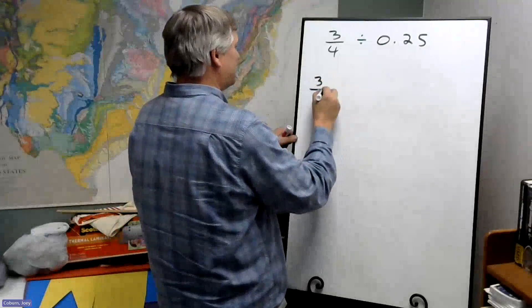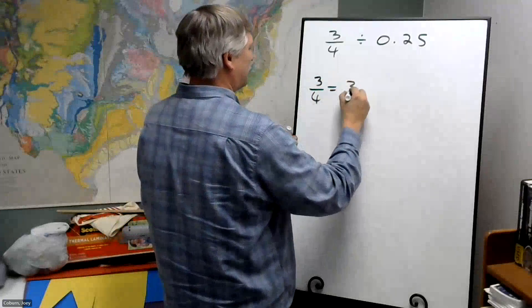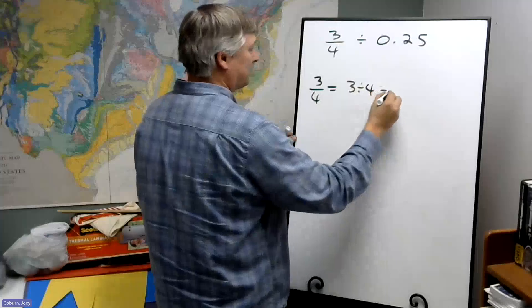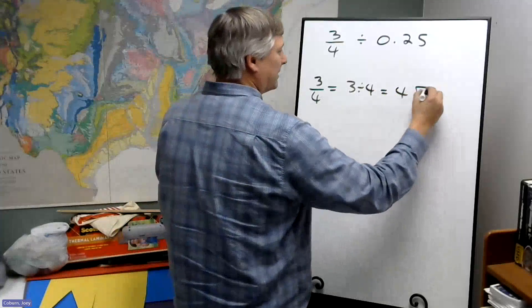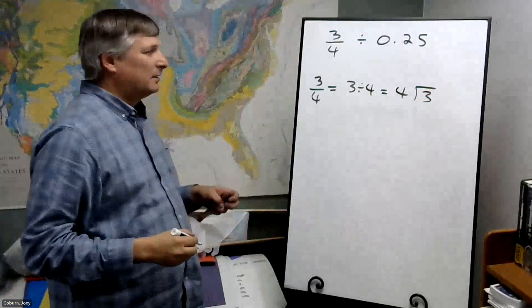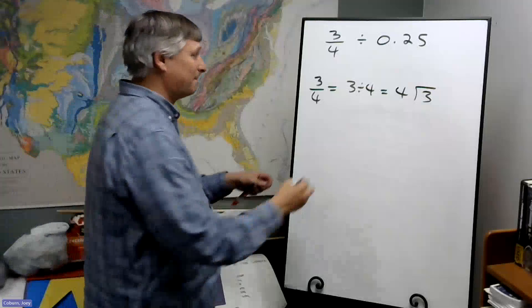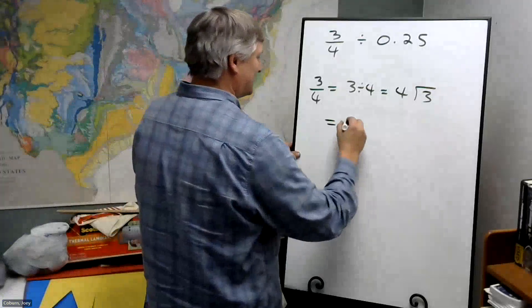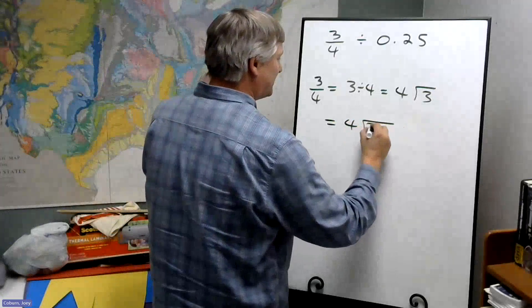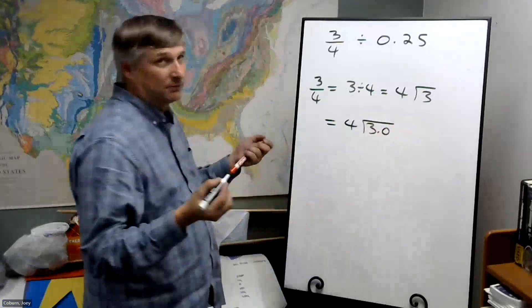So, three-fourths, three divided by four, which in long division form we would write like this. But four won't go into three. So, four will go into a pretend 30, 3.0. We'll copy the decimal.